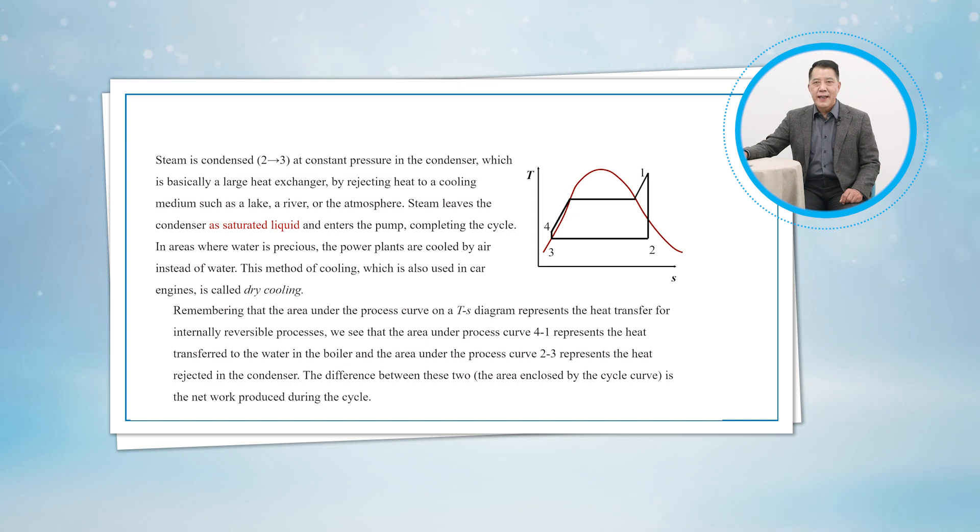Remembering that the area under the process curve on a T-S diagram represents the heat transfer for internally reversible processes, we see that the area under process curve 4 to 1 represents the heat transferred in the boiler, and the area under process curve 2 to 3 represents the heat rejected in the condenser. The difference between these two is the net work produced during the cycle.